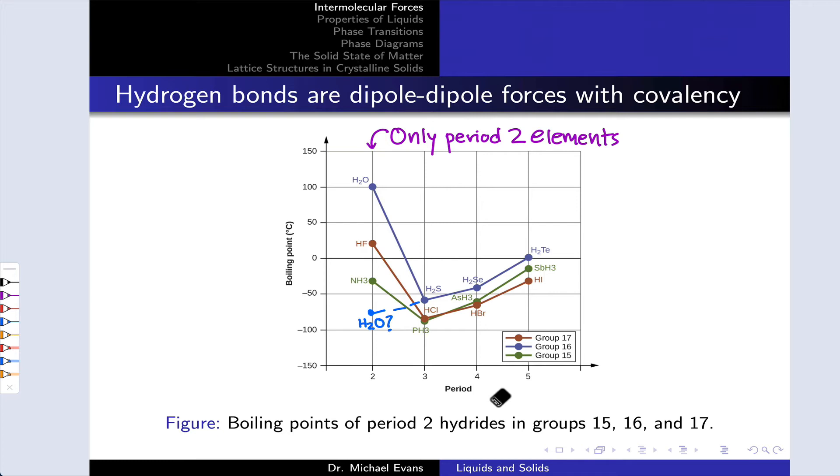Well, the proof is kind of in the pudding if you look at boiling points. For example, just based on London forces and polarizability, we would expect the boiling point of water to be lower than that of H2S. We would expect this curve to continue moving down as we got to lighter and lighter elements going from H2Se to H2S to H2O. It doesn't. The boiling point shoots way, way up. There's something very different about the intermolecular forces in H2O relative to H2S. And the same observation is made if we look at HF relative to the other halogens and NH3 relative to the other group 15 elements.